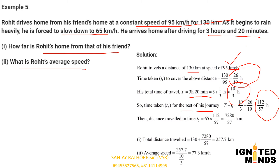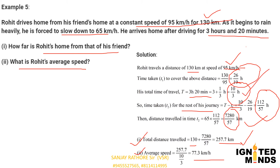The distance for the second part of Rohit's journey = 65 × (112/57) = 7280/57 km. Total distance = 130 + 7280/57 ≈ 257.7 km. Average speed = total distance ÷ total time = 257.7 ÷ (10/3) ≈ 77.3 km/h.